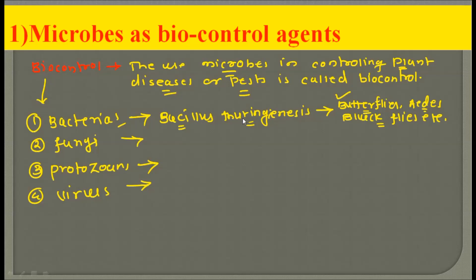This Bacillus thuringiensis — you may have heard about it because this is the famous Bt. From the gene of Bacillus thuringiensis we have Bt cotton. The gene of Bacillus thuringiensis has been transferred into cotton, and that is why that plant is famously called Bt cotton.